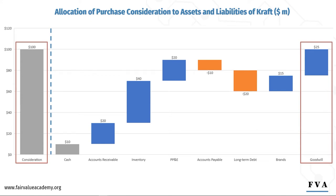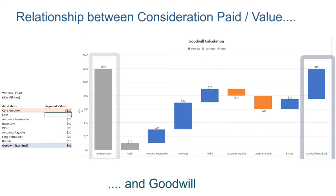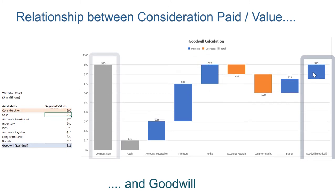Let me illustrate this. If Heinz were to pay $120 million for Kraft, Goodwill increases to $45 million. On the other hand, if Heinz were to pay $90 million for Kraft, Goodwill decreases to $15 million.